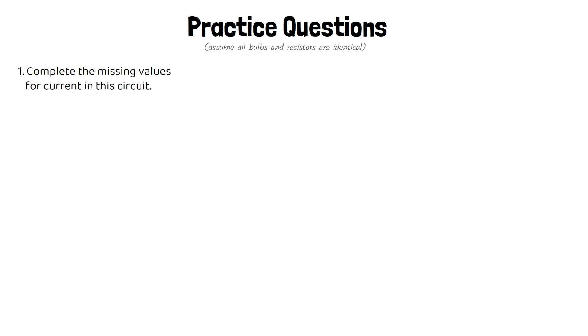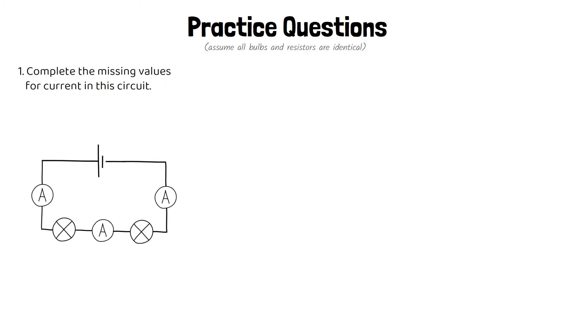Firstly, complete the missing values for current in this circuit. If the first ammeter records a reading of three amps for the current, what will the other ammeters read?